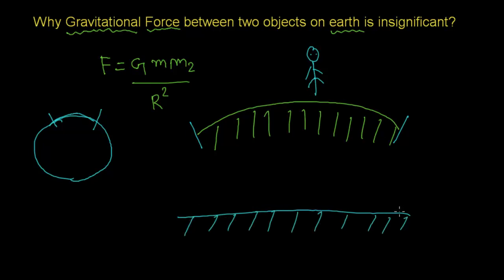Consider this as the earth's surface, and this is some object mass m1 and this is some another object mass m2, and distance between them is small r. And this is the center of the earth and this is the radius of the earth, that is capital R.